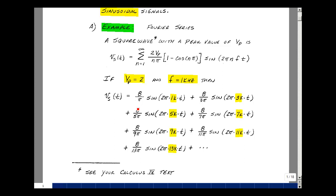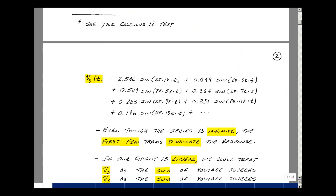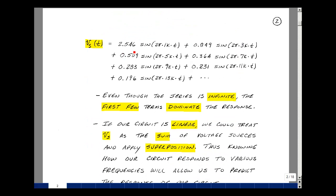Let me next evaluate these leading coefficients with the sine waves. The first term was 2.546, this is 8 over π, times sin(2π·1k·t). The second term is 0.849, a little bit smaller. The third term, a little bit smaller, and so on down the line. So they're getting progressively smaller. Even though the series is infinite, you can see here the first few terms dominate the summation.